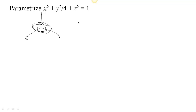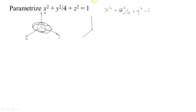Now if it had symmetry around the z-axis we could just use cylindrical coordinates. So what we could think of is: what if we just change the names of the axes? For now let's let y be z and z be y. So now it has symmetry around the z-axis, because we just changed the names of the corresponding axes. So now that it has symmetry around the z-axis, we can use cylindrical coordinates to find a parametrization.